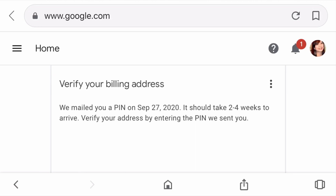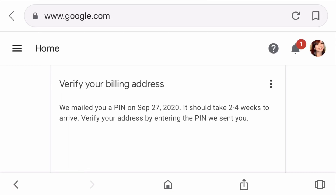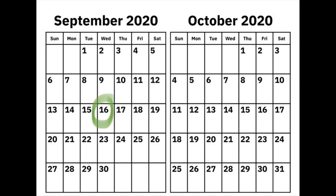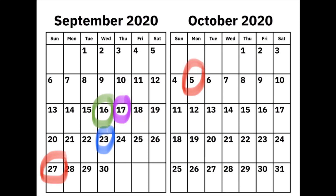It says: 'We mailed you a PIN on September 27th, 2020. It should take two to four weeks to arrive. Verify your address by entering the PIN we sent you.' They sent the PIN on September 27th and I received it October 5th — just eight days for me — but it depends on your location. I'm from Houston, Texas, so maybe that's why it's faster. I applied for monetization on September 16th and it only took 24 hours to approve. Six days after that I reached the minimum threshold to qualify for a PIN, and after a week I received it.